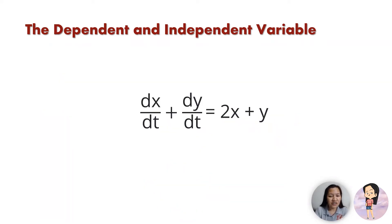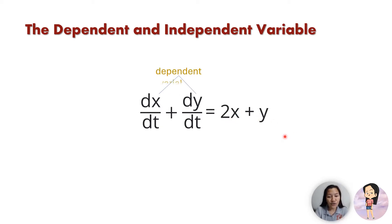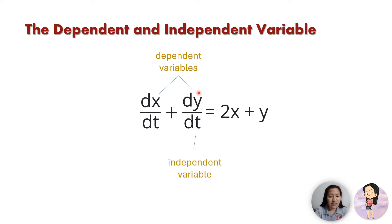Another example: dx/dt + dy/dt = 2x + y. Here we have two dependent variables — x and y, the variables being differentiated — and a single independent variable t, which is the variable of differentiation.